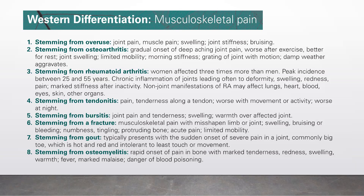Number four, stemming from tendonitis: pain and tenderness along a tendon, worst with movement or activity, and worst at night. Number five, stemming from bursitis: joint pain and tenderness, swelling, warm over the affected joint.